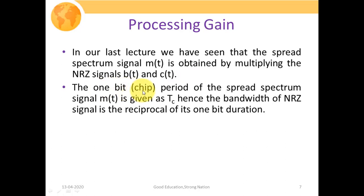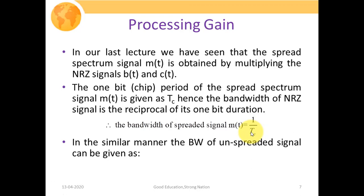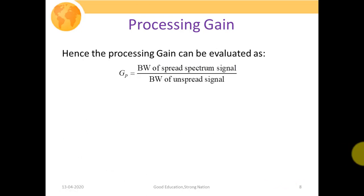The chip period of the spread spectrum signal M(T) is given as TC. For an NRZ signal, the bandwidth is the reciprocal of its bit period. Therefore, the bandwidth of the spread signal M(T) equals 1/TC, and the bandwidth of the unspreaded signal B(T) equals 1/TB. Hence, processing gain GP = (1/TC) / (1/TB) = TB / TC.